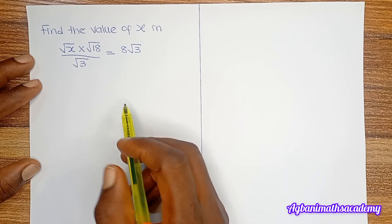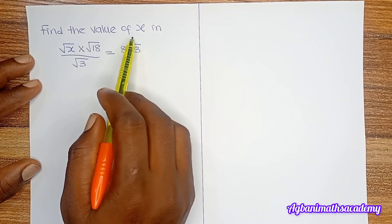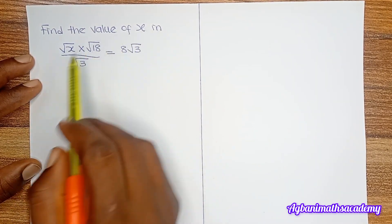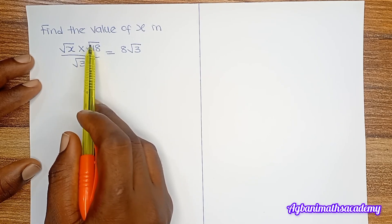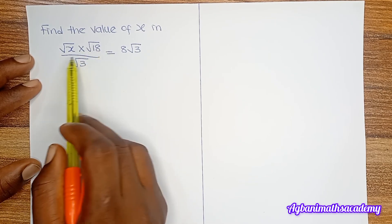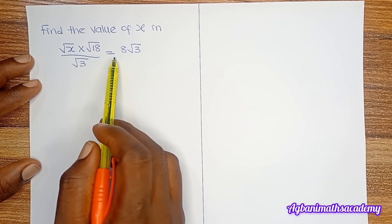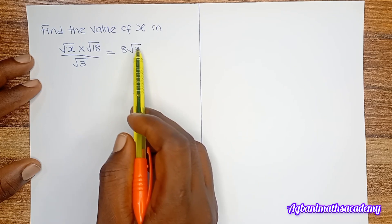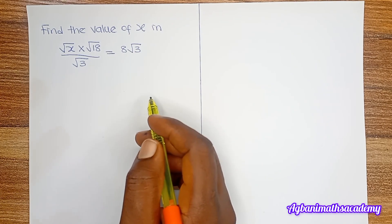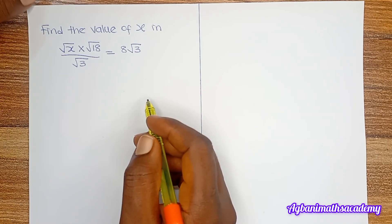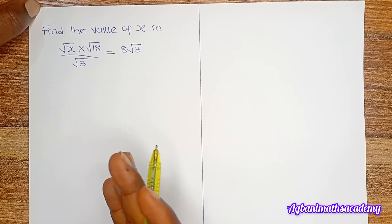Hi guys, let's look at this simple question. Find the value of x in: square root of x multiplied by square root of 18, all over square root of 3, is equal to 8 square root of 3. This is a surd equation — an equation involving surds.